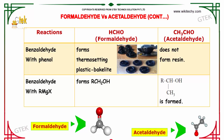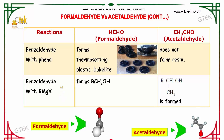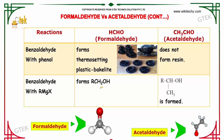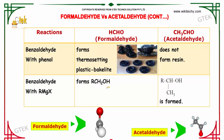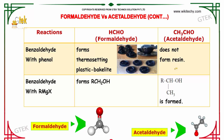When a Grignard reagent (RMgX) is made to react with formaldehyde, it forms RCH₂OH, which is a primary alcohol, whereas in the presence of acetaldehyde it forms a secondary alcohol.